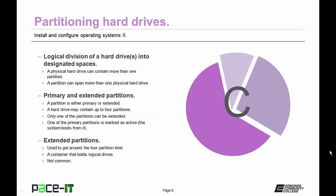A physical hard drive can contain more than one partition, and a partition can span more than one physical hard drive. A hard drive partition is either primary or extended. A hard drive can contain up to four partitions, and only one of those can be extended. One primary partition is marked as active — that's where the system boots. An extended partition is used to get around the four-partition limit, acting as a container to hold logical drives.